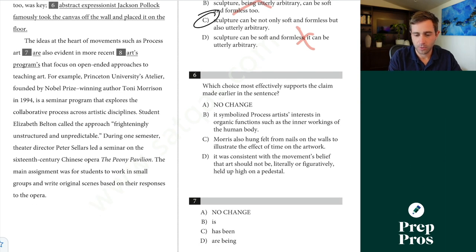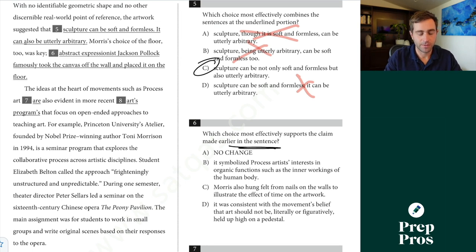All right, number six, which choice most effectively supports the claim made earlier in the sentence? So Morris's choice of the floor was key. Not a lot of context to go off of. Blank, abstract expressionist Jackson Pollock famously took the canvas off the wall and placed it on the floor. Well, we're talking about Morris's choice on the floor was key. Doesn't make any sense at all to introduce Jackson Pollock. So that's going to let me eliminate this answer. It symbolized process artists' interest in organic functions such as the inner workings of the human body. Don't have any evidence of that, and we haven't discussed any of this at all elsewhere in the passage. Morris also hung felt from nails on the walls to illustrate the effect of time on the artwork, not really necessarily going back to the floor. It was consistent with the movement's belief that art should not be literally or figuratively held up high on a pedestal. This is the only one that makes any sense. All these other ones are introducing new information and using a little bit of the outside context to the rest of the passage. Don't work at all.